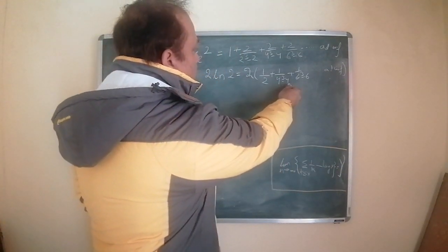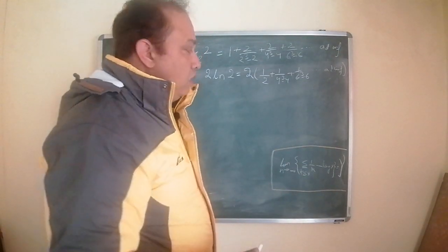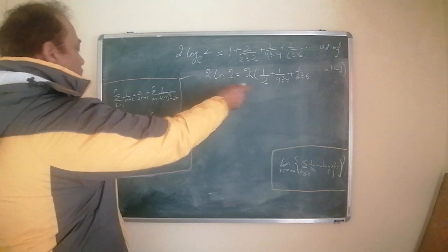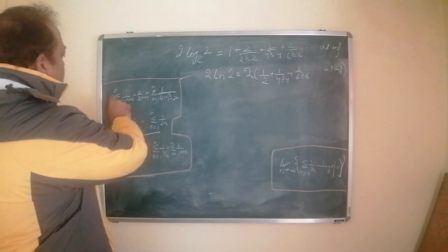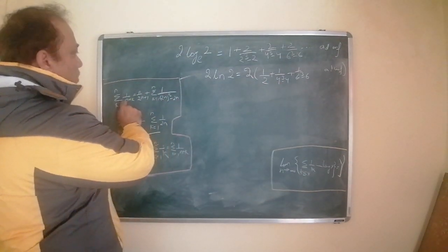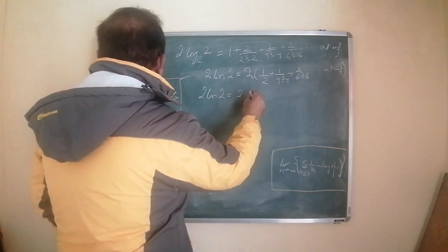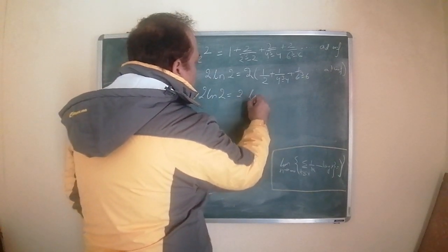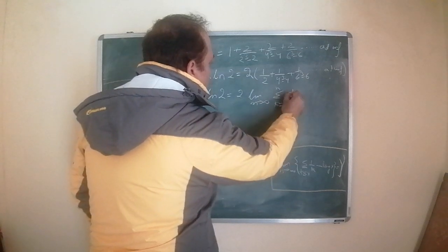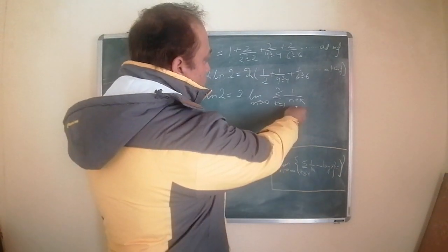Now this expression we had already seen in our previous video on Ramanujan's first identity of the second chapter of the first notebook — that this expression is equal to the sum from k equals 1 to n of 1 upon n plus k. So I can replace this, and this becomes: 2 times natural log of 2 is equal to 2 times the limit as n approaches infinity of the sum from k equals 1 to n of 1 upon n plus k.